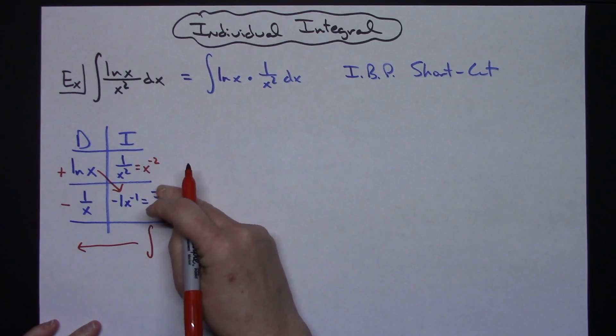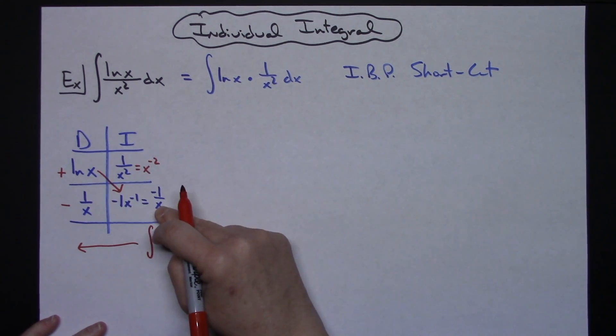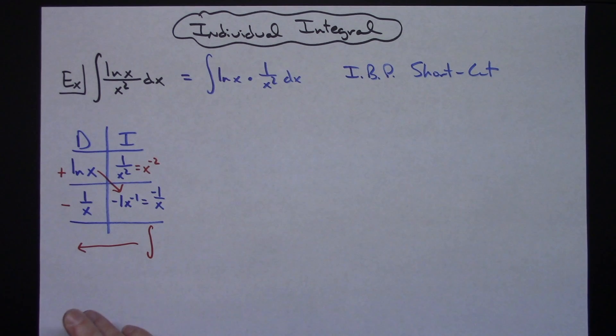If I take a look at negative one over x times negative one over x, that's going to be a positive one over x squared. Well we've already integrated that, we know we can integrate that, so then I can call this quits and I have actually integrated this.